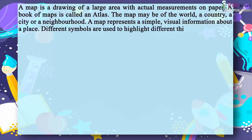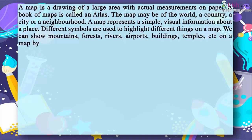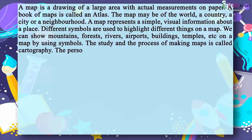Different symbols are used to highlight different things on a map. We can show mountains, forests, rivers, airports, buildings, temples, etc. on a map by using symbols. The study and the process of making maps is called cartography.